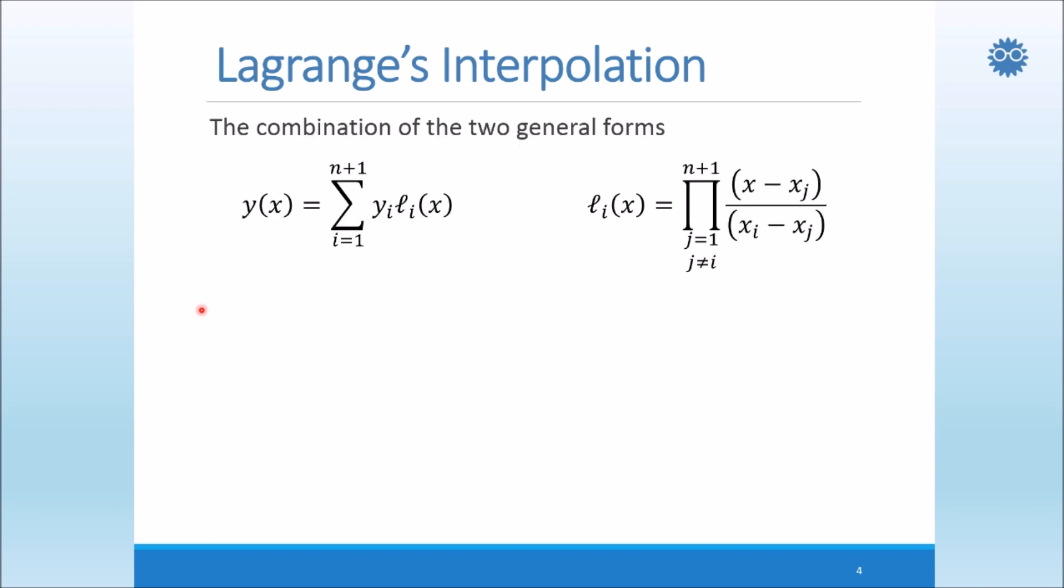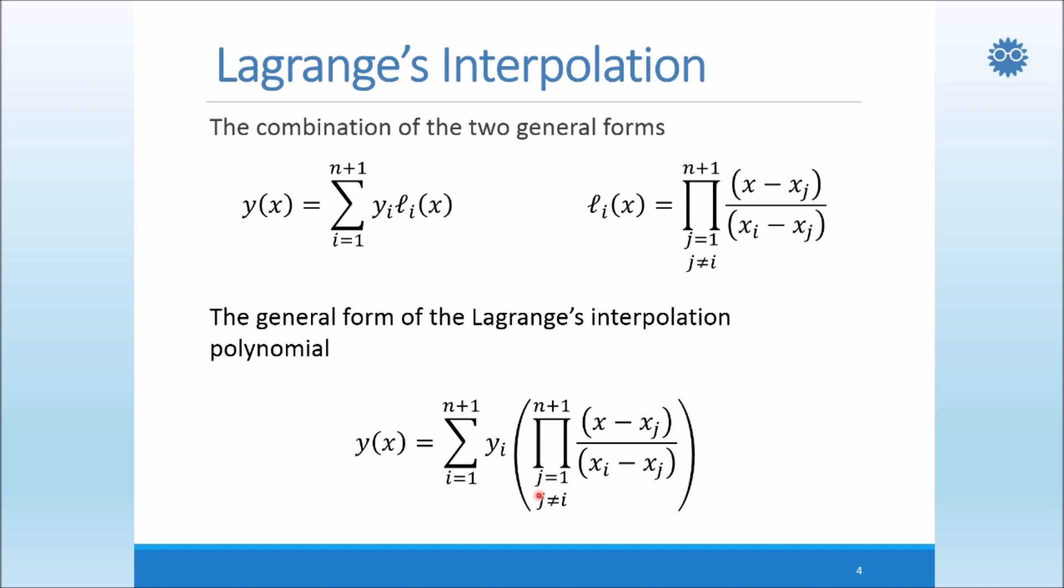Now we have two components. We recall these two components again here in order to help us form the final general form. So we have summation form, we have product form. So we combine both of them just by substituting the right-hand side of li here. So we will get this general form. Actually, it is an algorithm because we will program the method upon or depending upon this general formula.